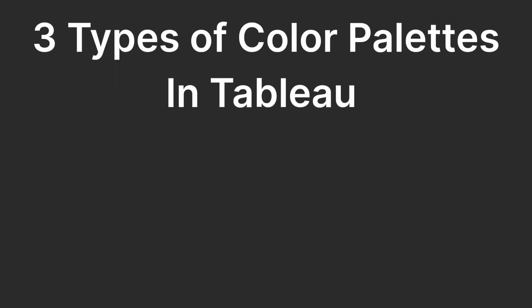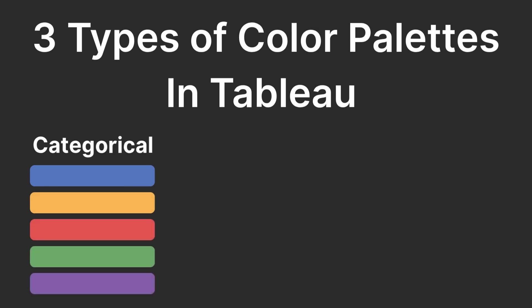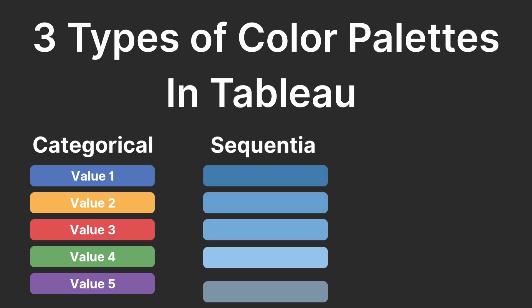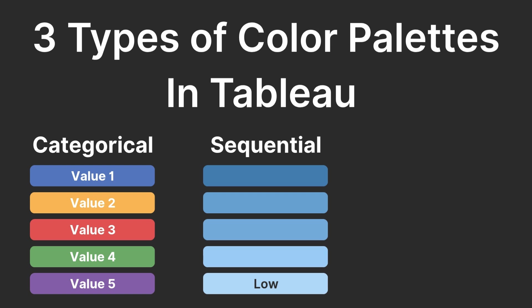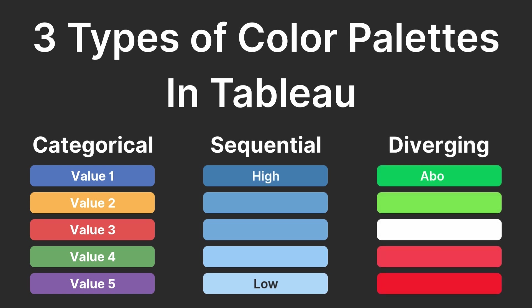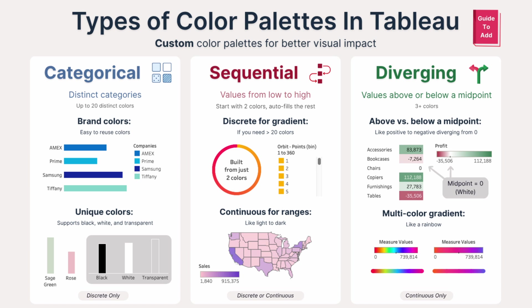Tableau supports three main types of color palettes. Categorical, which are made of distinct items — each value gets its own distinct color and there's no gradients. Sequential, which is for values that go from low to high, creating a smooth gradient where lighter colors mean lower values and darker means higher. And diverging, which is for data that goes above and below a midpoint — like having two gradients that meet in the middle with a neutral color in the center. Each type has a different purpose.